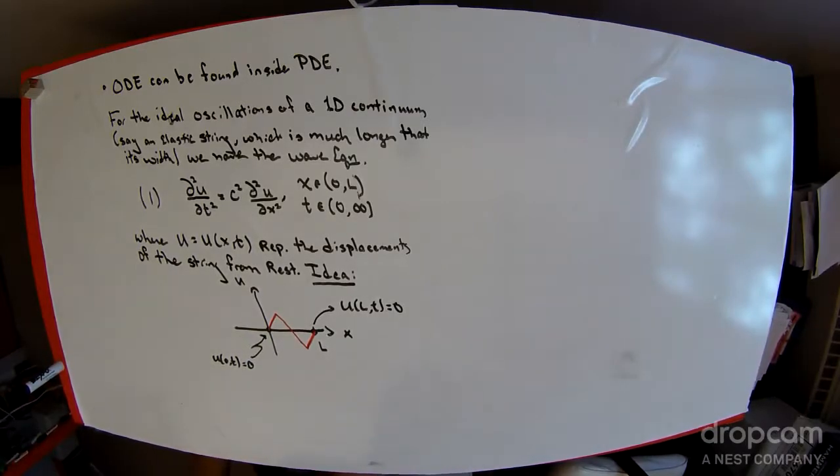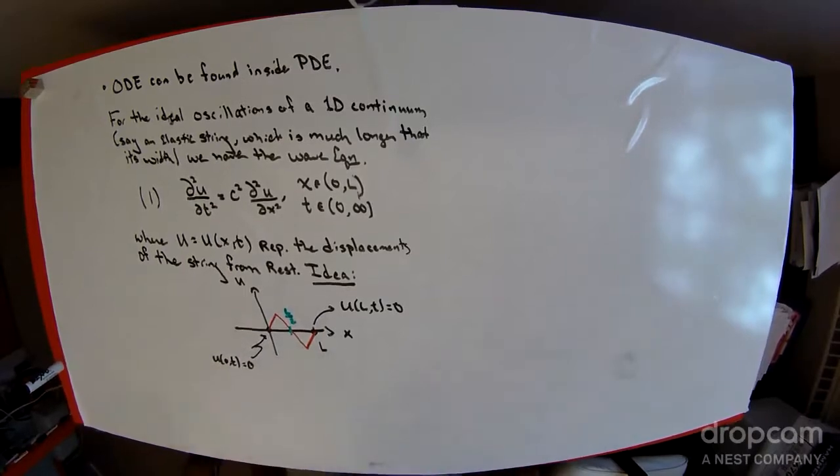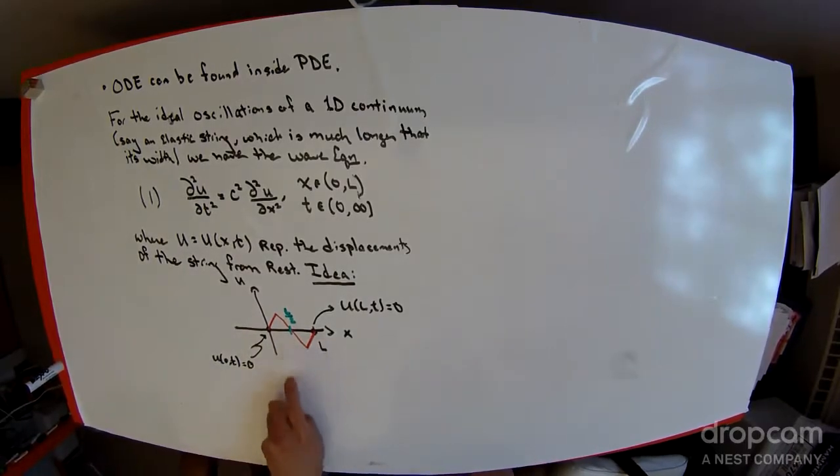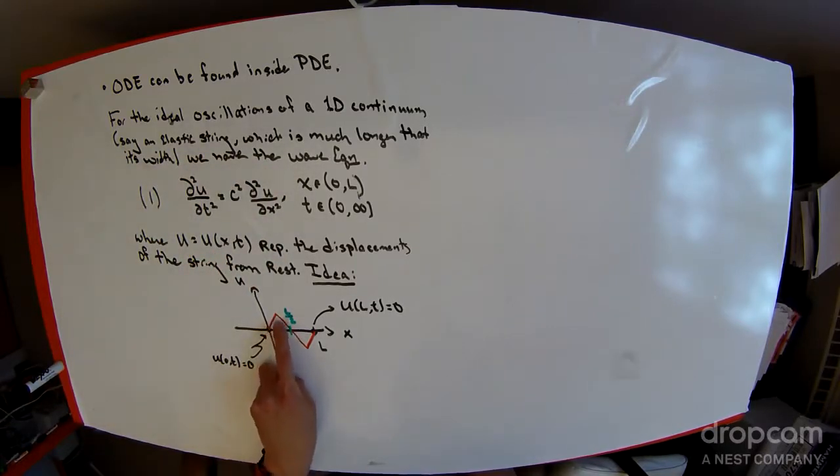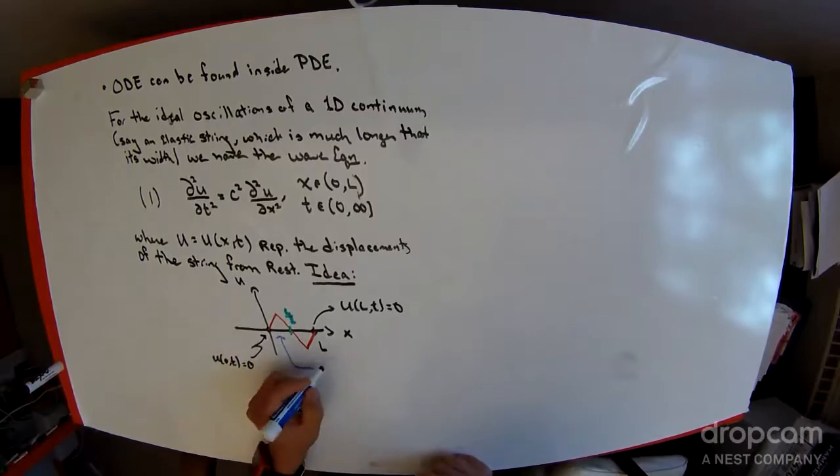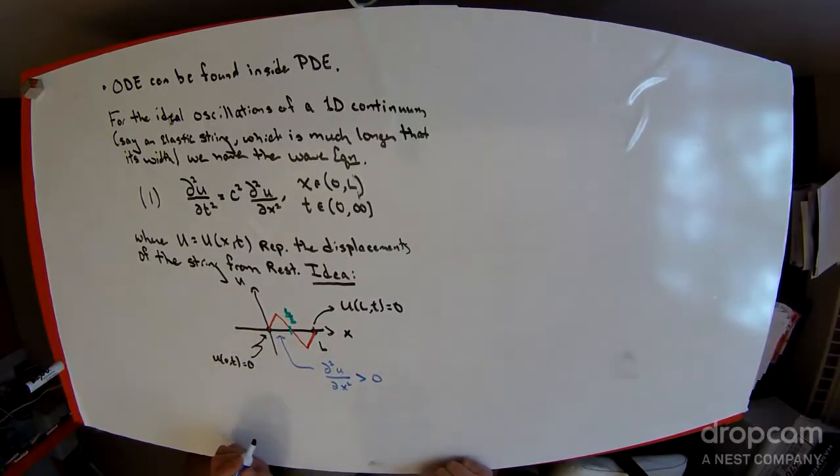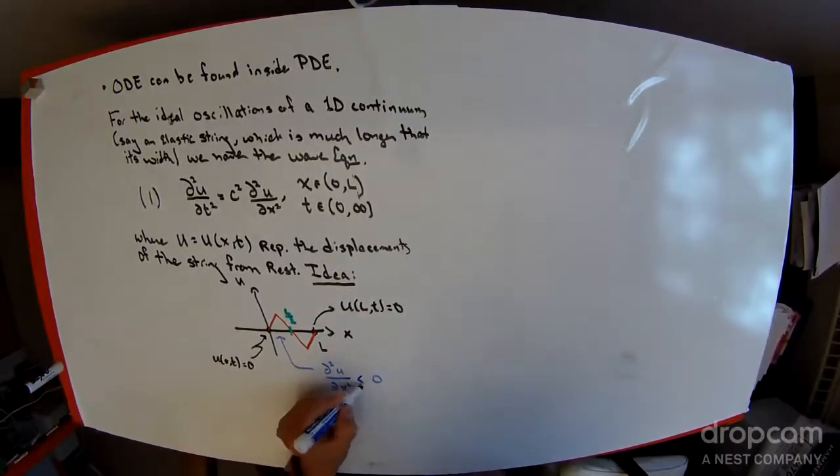We can put a displacement on that guitar string, maybe something like this triangle. What this equation is trying to tell you about the time dynamics is how this red displacement curve is governed. In this region where the triangle is pointing upward, the shape of the curve is generally concave down. If it's concave down, then the second derivative of u with respect to space is a negative quantity.